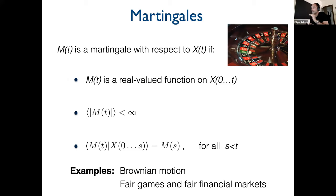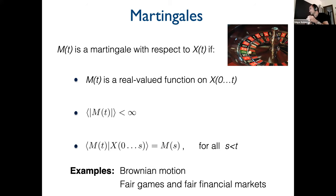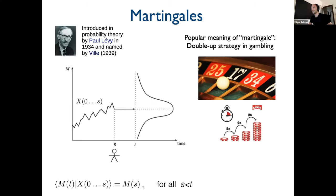For this I apply what is called martingale theory. A martingale is a type of stochastic process with these properties: it is real-valued, finite (doesn't diverge), and most importantly, the expected value in the future equals the last observed value of the process. If you see a martingale process up to time s, what you expect in the future is that it stays flat on average. Examples are Brownian motion without drift and also fair games and fair financial markets. These processes have been applied a lot in mathematical finance.